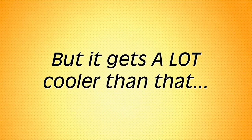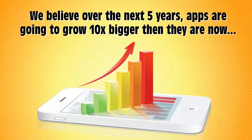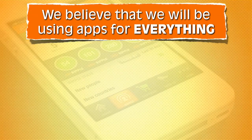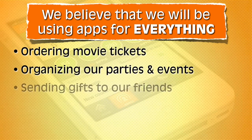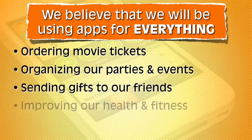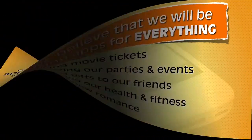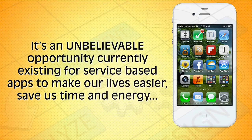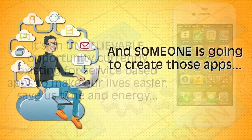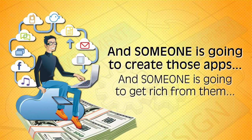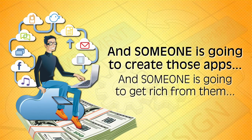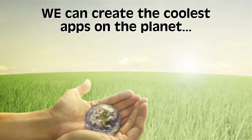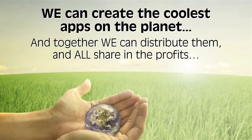You have the chance to get rewarded on all of the value taking place inside of your network any time you share a hot new app. So when Ripplin introduces our own mobile role-playing game, instead of sharing Clash of the Clans with your friends, just share the ones that you are getting rewarded from. Every time someone in your Ripple purchases anything inside those apps, you have the chance to get paid for it. We believe that over the next five years, apps are going to grow ten times bigger than they are right now — from ordering movie tickets to organizing parties, sending gifts, improving health and fitness, to finding new romance. Someone is going to create those apps, and someone is going to get rich from them. Using this new model of incentivized sharing, we can create the coolest apps on the planet, distribute them together, and all share in the profits.